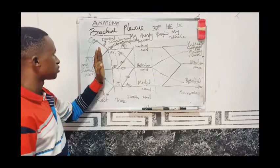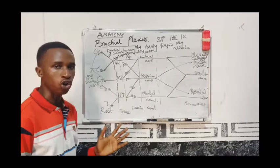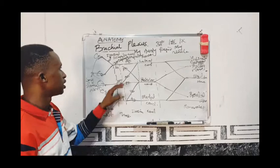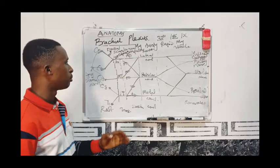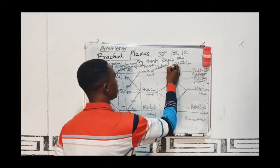Take note: only the superior trunk gives rise to side branches. The middle trunk and the inferior trunk do not give rise to side branches. The divisions do not give rise to any side branch. The lateral cord gives rise to a nerve called the lateral pectoral nerve.